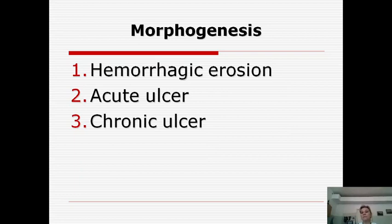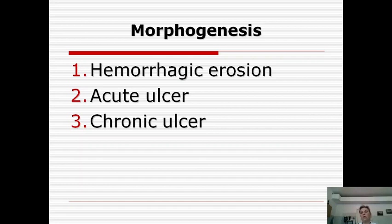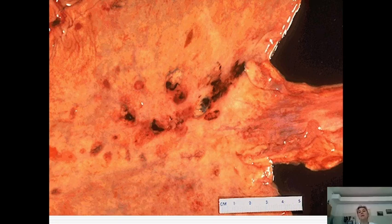In morphogenesis there are three stages of peptic ulcer. First, hemorrhagic erosions — many superficial defects in the mucous membrane; this stage is reversible. Next, acute ulcer — deep necrosis but up to one centimeter. Then chronic ulcer — with the appearance of connective tissue at the bottom and edges of the ulcer. This is followed by a cyclic, repeating acute-to-chronic course.